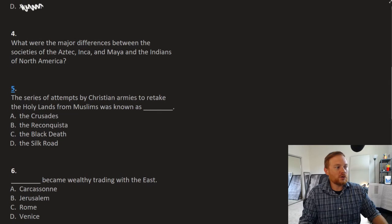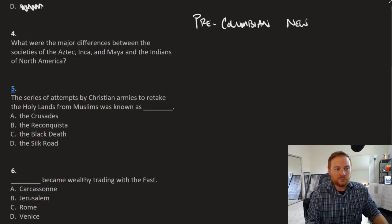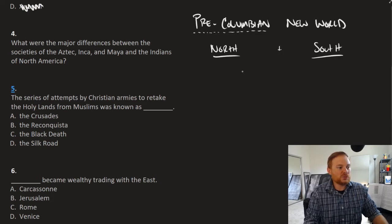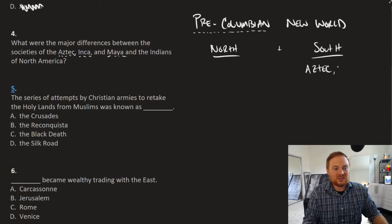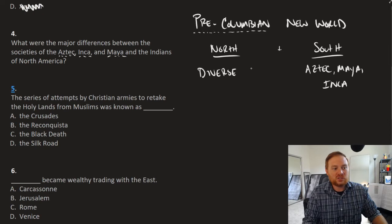Question number four, what were the major differences between the societies of the Aztec, Inca, and Maya, and the Indians of North America? So this is pre-Columbian New World. New World refers to North and South America. Pre-Columbian simply refers to before Christopher Columbus. And we can pretty much categorize it in North America and South America. Now which of these groups belong to South America: Aztec, Inca, Maya. So we can put that under this category. The Aztec, technically the Maya, technically we might call that Central America, but for the purposes here, Indians in North America, of course, we have a lot of different tribes. So certainly there's much more diversity. That's one distinction that we can say. There's much more diverse groups of people. Generally speaking, they're more dispensed or dispersed.